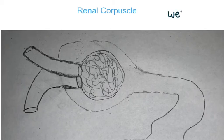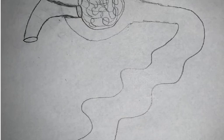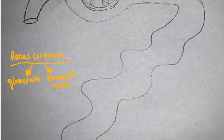Welcome back to Underground Science. In this video we'll be looking at the renal corpuscle. The renal corpuscle is made up of our glomerulus and our Bowman's capsule.